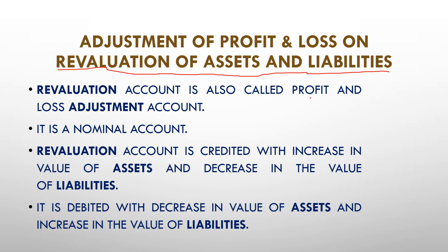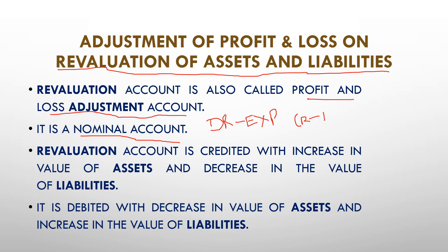This account is also called a Profit and Loss Adjustment Account. So that's why the name of this account is Revaluation Account, and it is also known as Profit and Loss Adjustment Account. And it is a nominal account. Nominal account ka matlab — rule sabhi ko malum hoga — debit all the expenses and losses and credit all the income and gains. So nominal account ke andar jitne bhi profit hoga, loss or expense hoga, wo sare debit honge; jitni bhi income or gains hongi, wo sare credit honge. Same rule applicable here — revaluation account ki bhi dono sides hain: one is debit and one is credit.